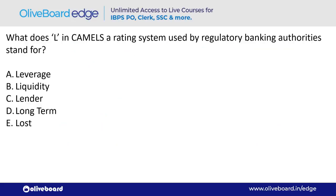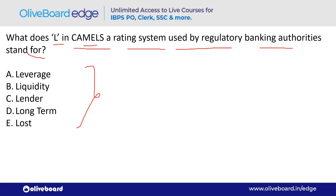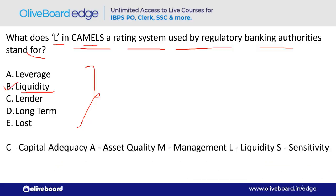What does 'L' stand for in the CAMELS rating system used by regulatory banking authorities? L stands for Liquidity. The full form: C = Capital Adequacy, A = Asset Quality, M = Management, E = Earnings, L = Liquidity, S = Sensitivity.